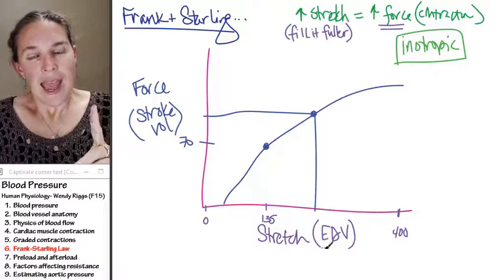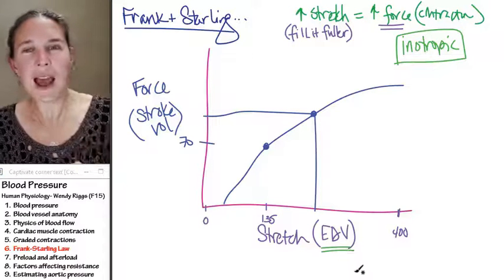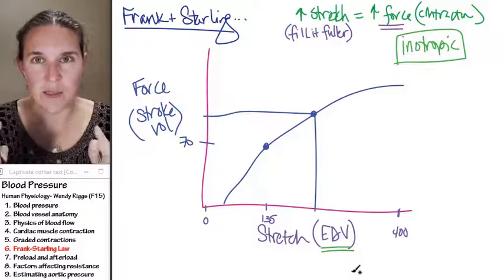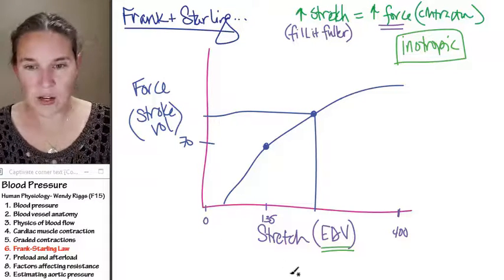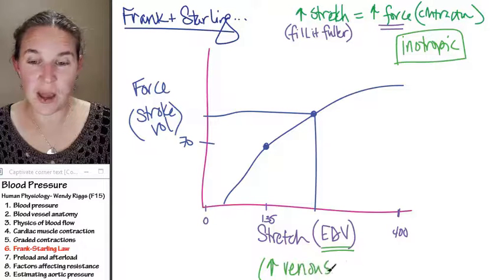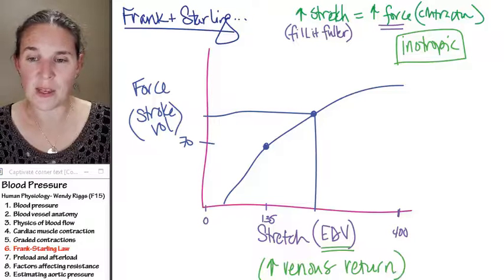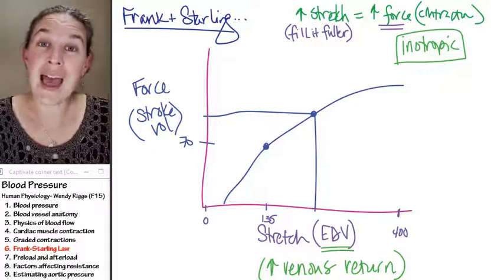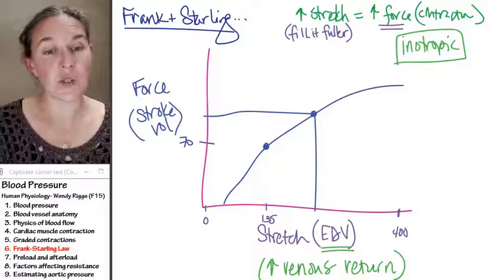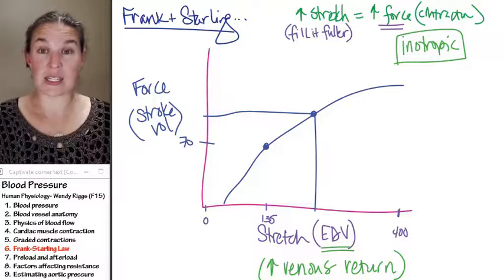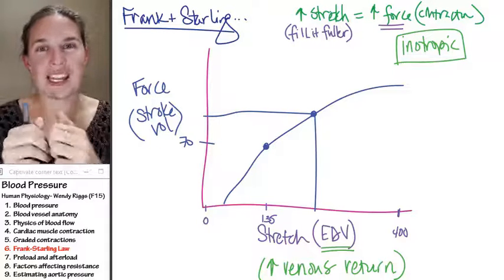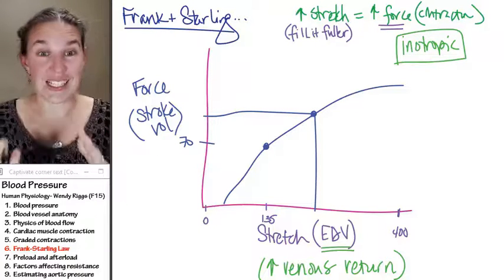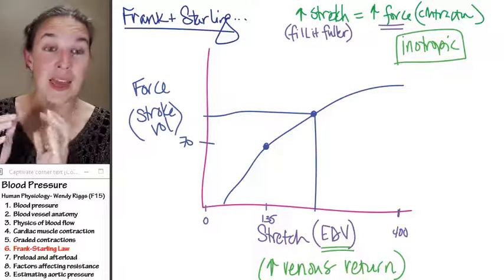Now, how do you increase end diastolic volume? Well, somehow you have to get more blood in your heart. Think about this. If you have greater venous return, increased venous return, think about that concept. Venous return is a way to think about the amount of blood that's coming back into the heart from the veins. If you have increased venous return, then you're going to have possibly increased end diastolic volume, which will lead to an increased stroke volume. Ultimately, how is an increased stroke volume going to affect blood pressure? It makes perfect sense that you have an increased force represented by stroke volume, and that's going to increase your blood pressure.